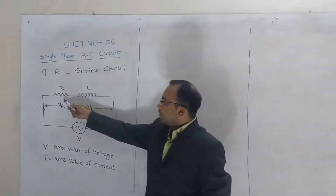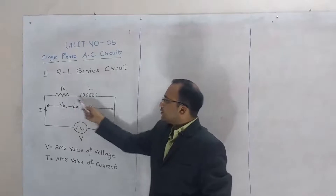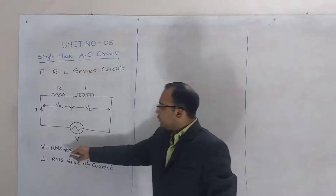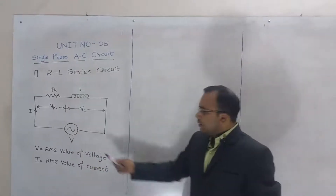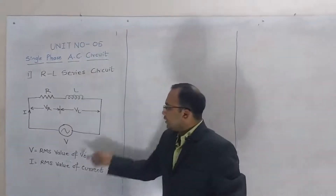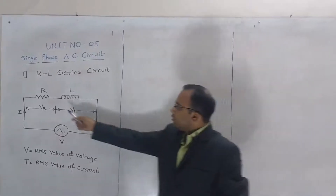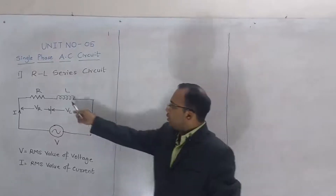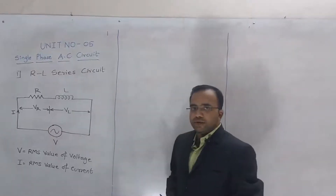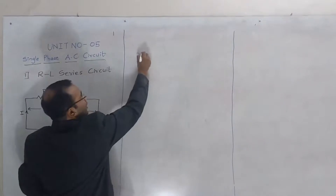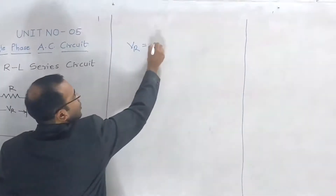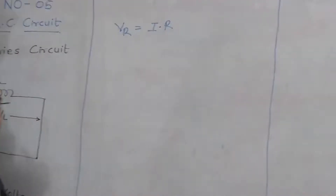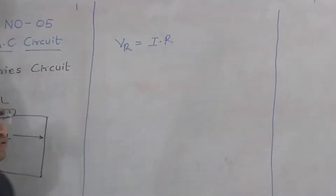This is a circuit diagram where resistance and inductance are connected in series across a supply voltage V, where applied voltage V is the RMS value of the voltage. The current flowing through the RL series circuit is the RMS value of the current. The drop across the resistance is VR and drop across the inductance is VL. Here VR is equal to I into R, that is the IR drop, according to Ohm's law.